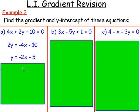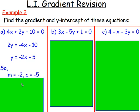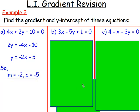The gradient is just how many x's you have — the number in front of x, which is negative 2. So m is negative 2. And the y-intercept — the number on its own — is negative 5, so it's crossing the y-axis at negative 5.